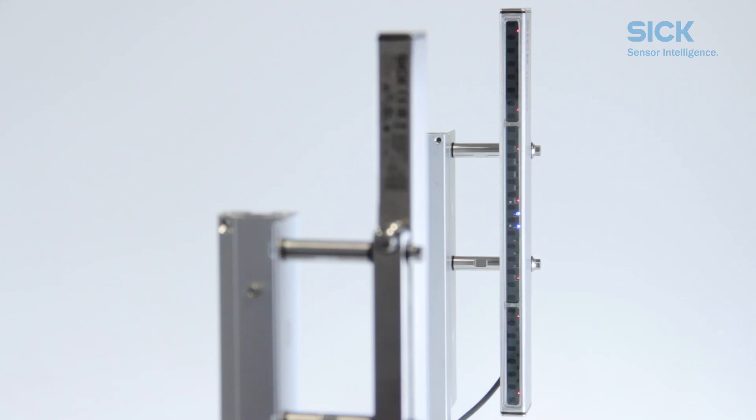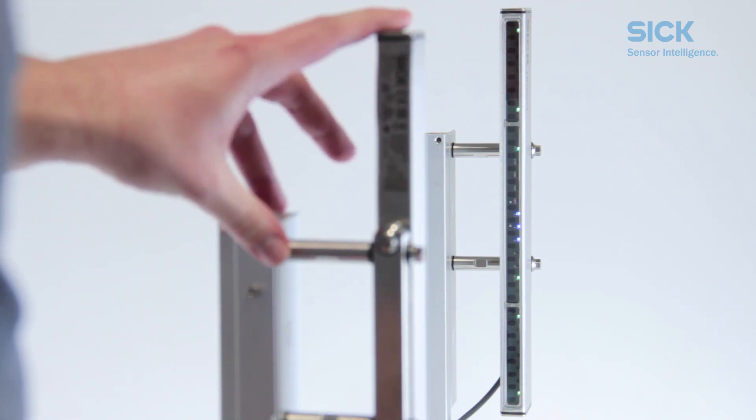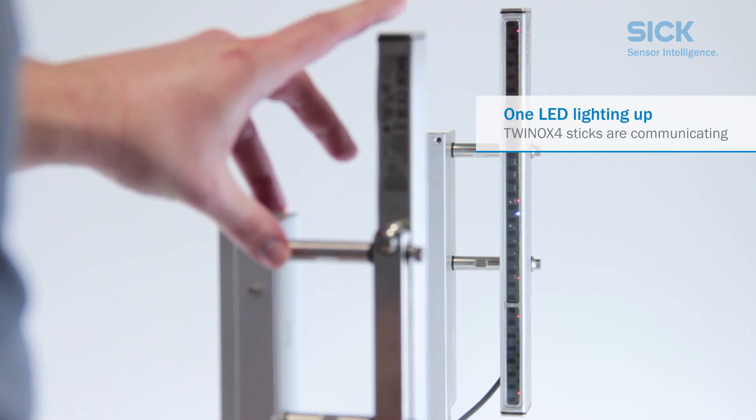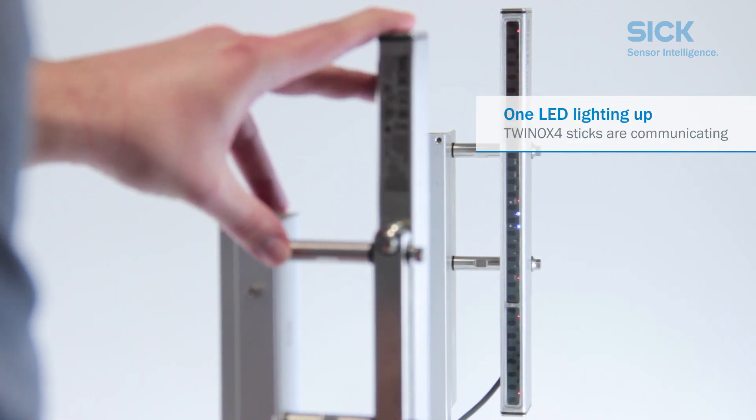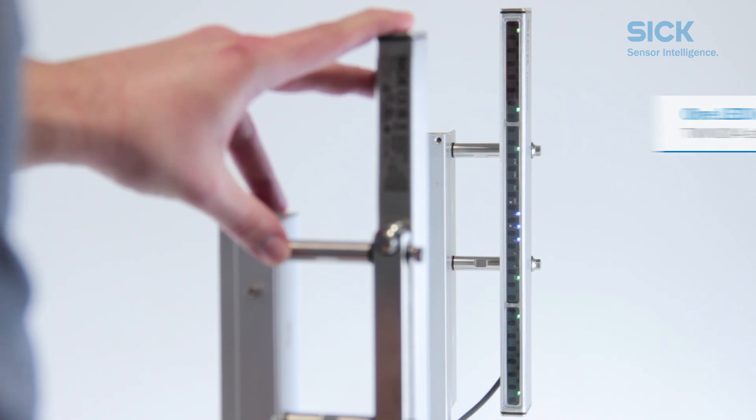For the actual alignment, we are using only the TWINOX4 stick that we have left loose a bit. Move it slightly until LED1 lights up blue. This means that the two twin sticks have started communicating with one another.